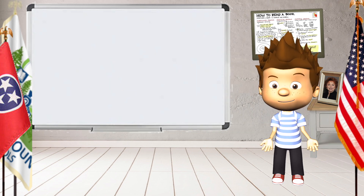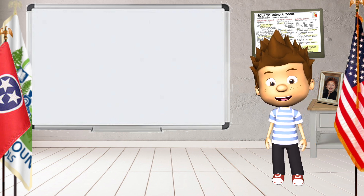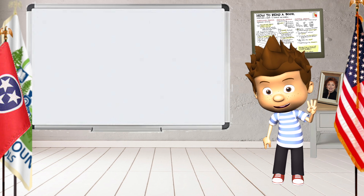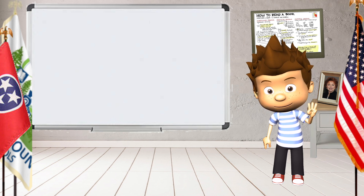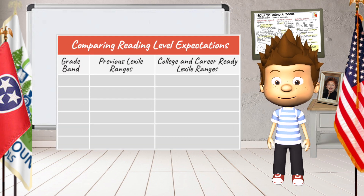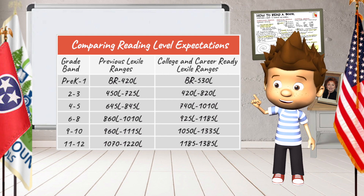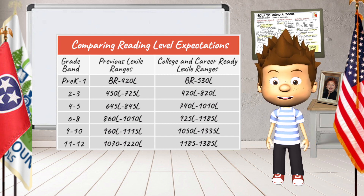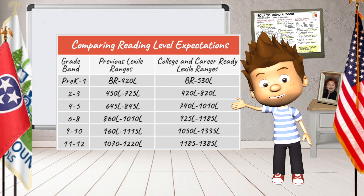What makes a text complex? There are two factors we look at when determining how complex a text is. The first is a measure calculated by a program such as the Lexile level. The Lexile level is determined based on the words used and the length of the sentences. Each grade band has its own Lexile level.